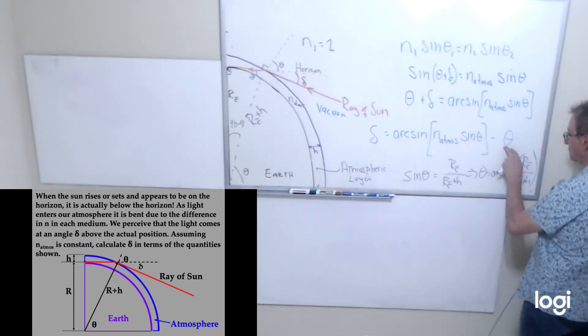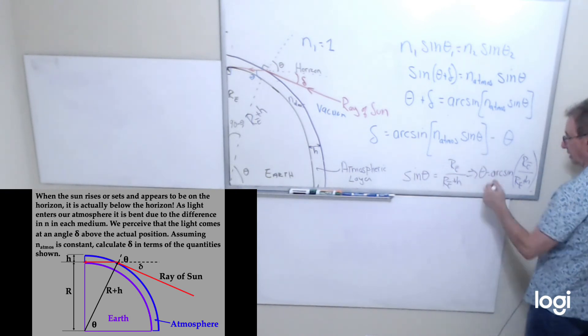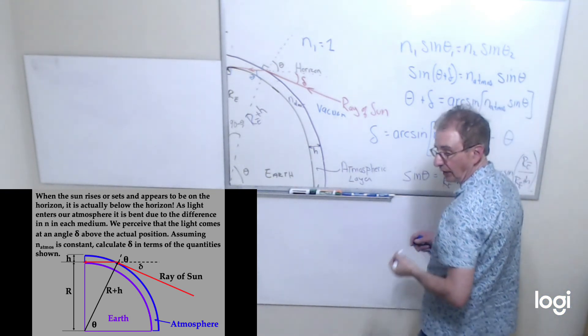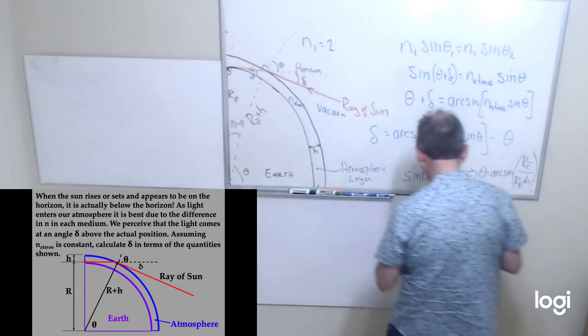So I can substitute this theta here. And then I can substitute this one over here. And so what I get, what I get then when I do all that substitution is the following fairly long equation.